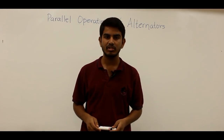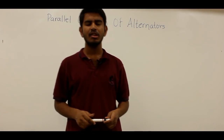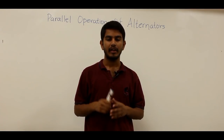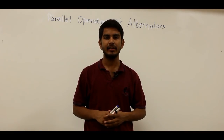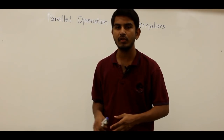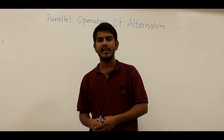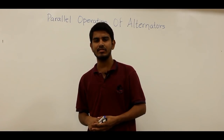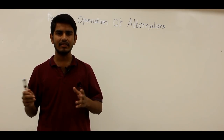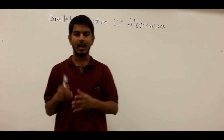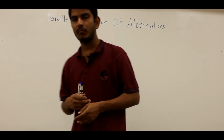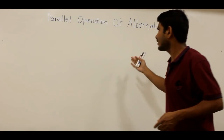In this video, let us discuss the parallel operation of alternators. The interconnection of electrical power systems is essential from an economical point of view as well as reliability. These interconnections of AC power systems require synchronous generators to be operated in parallel. Normally in generating stations, two or more generators are connected in parallel, and alternators located at different locations are connected to form a grid-connected system.